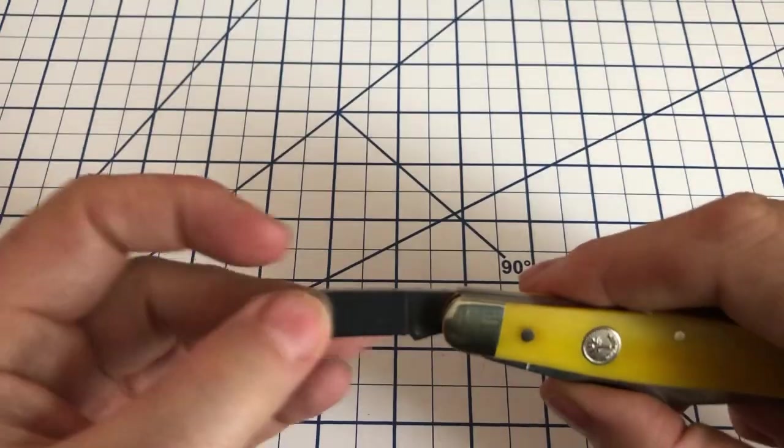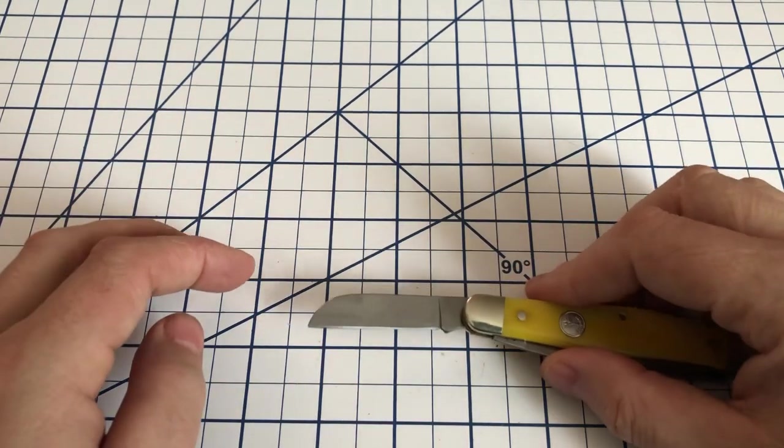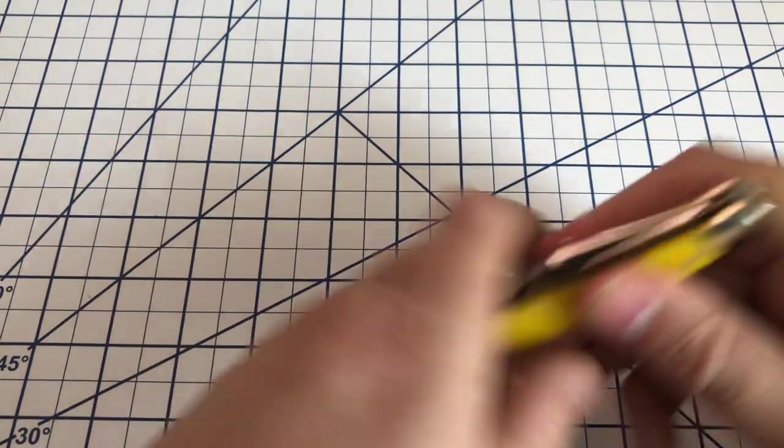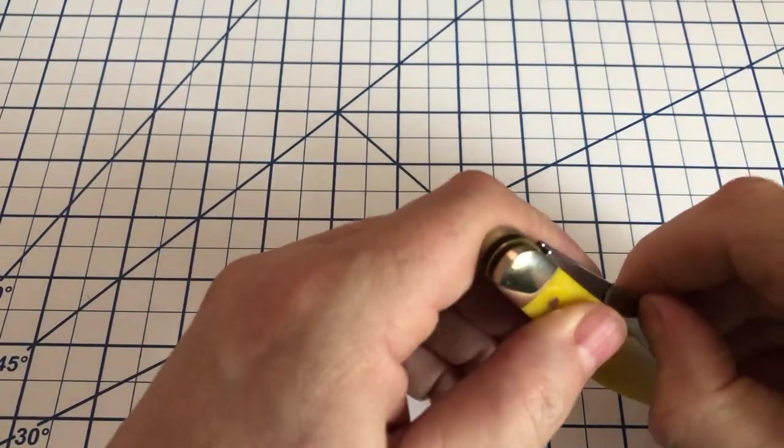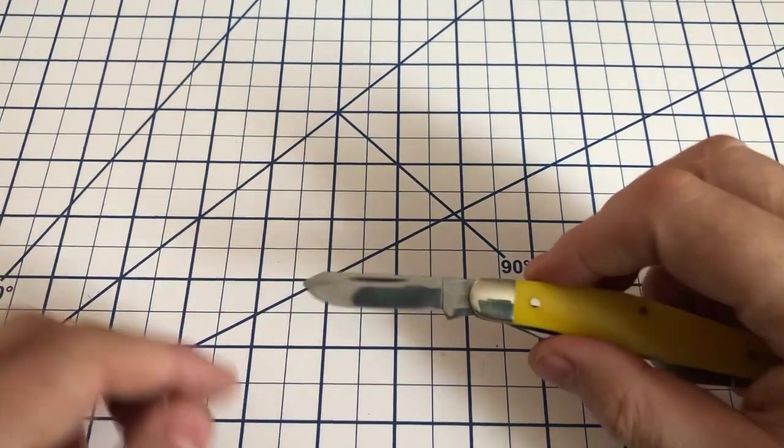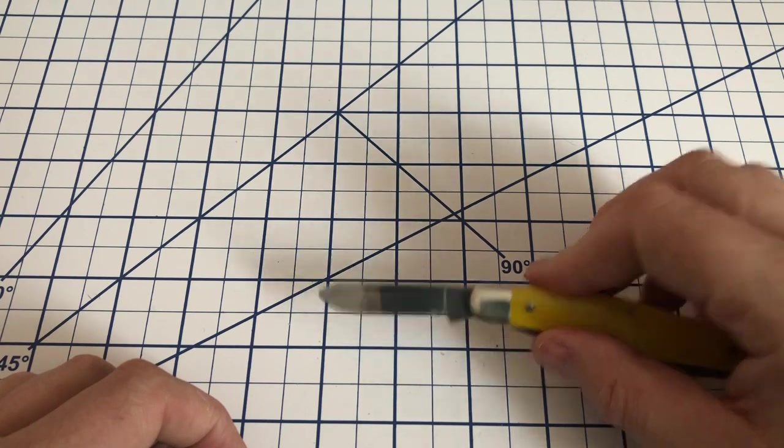Then you have the sheep's foot blade that is just a bit over two inches. And finally, of course, the spay blade which comes in right at about two inches.